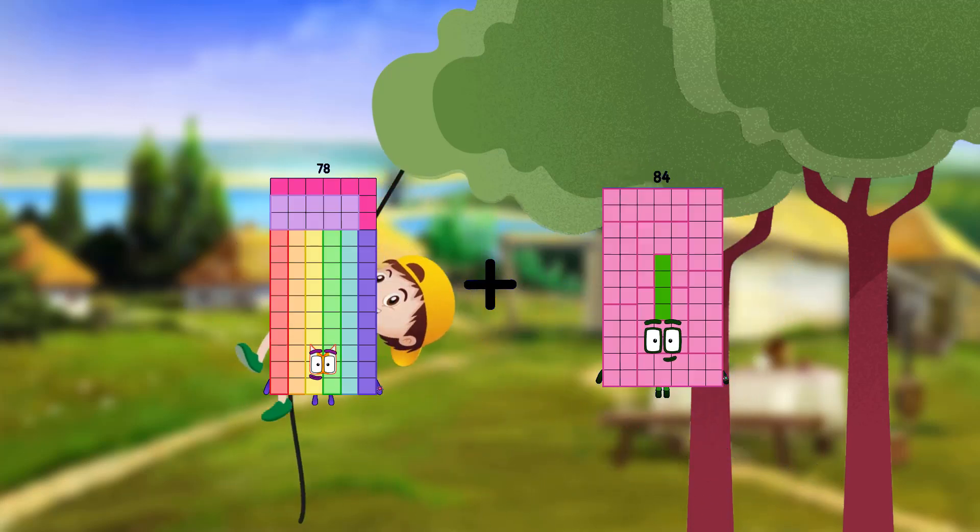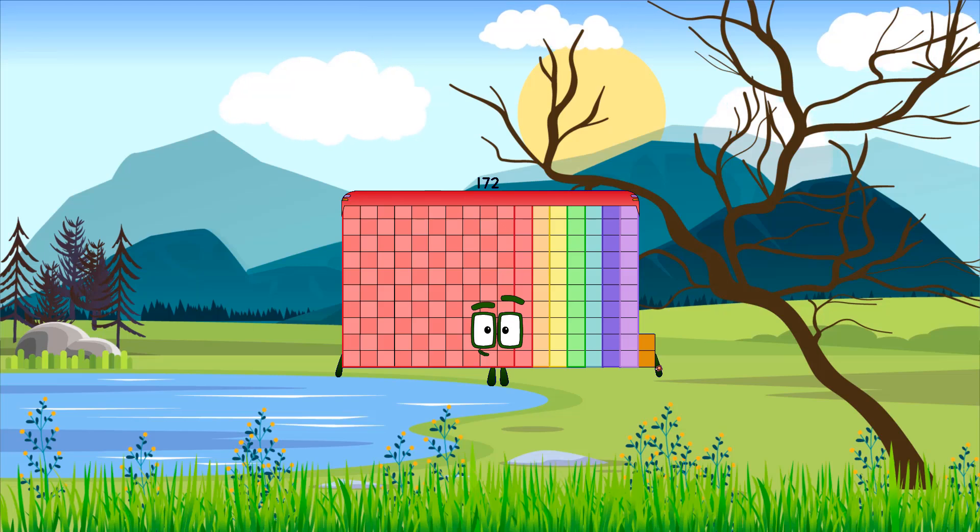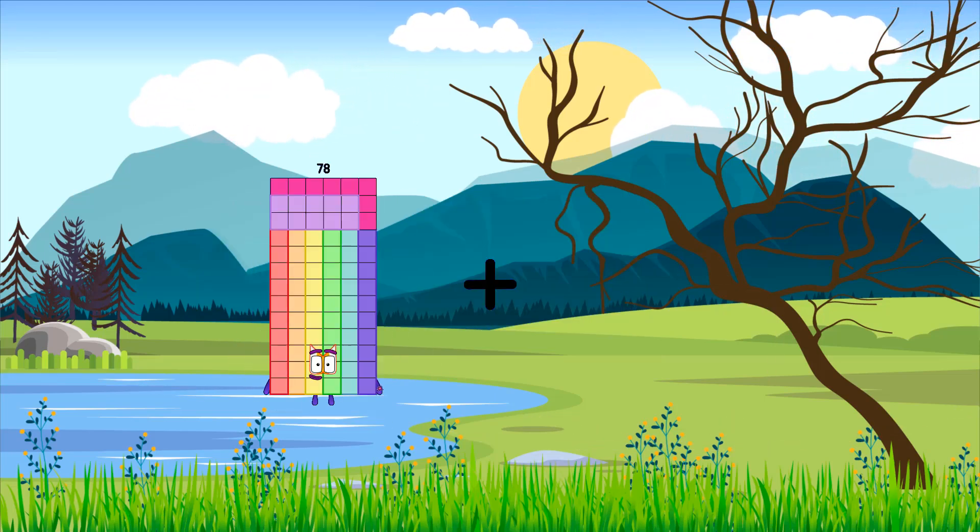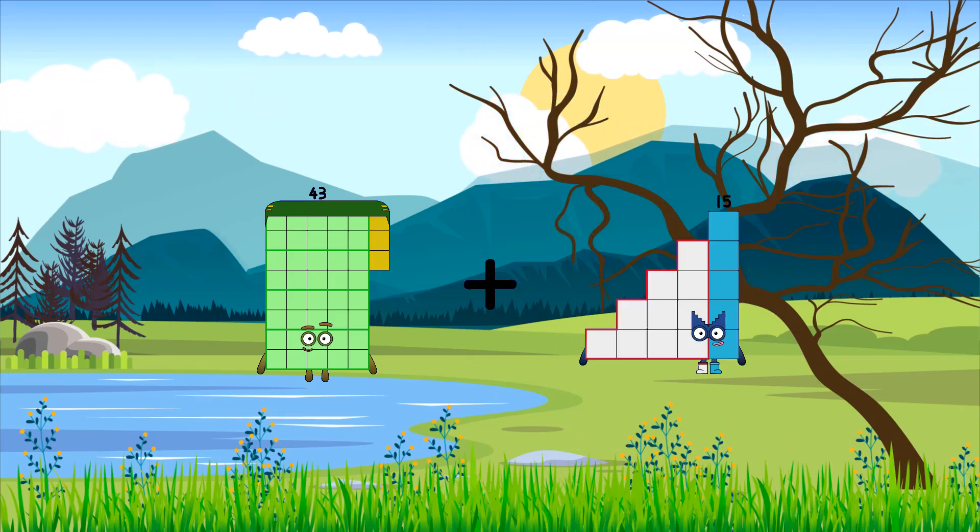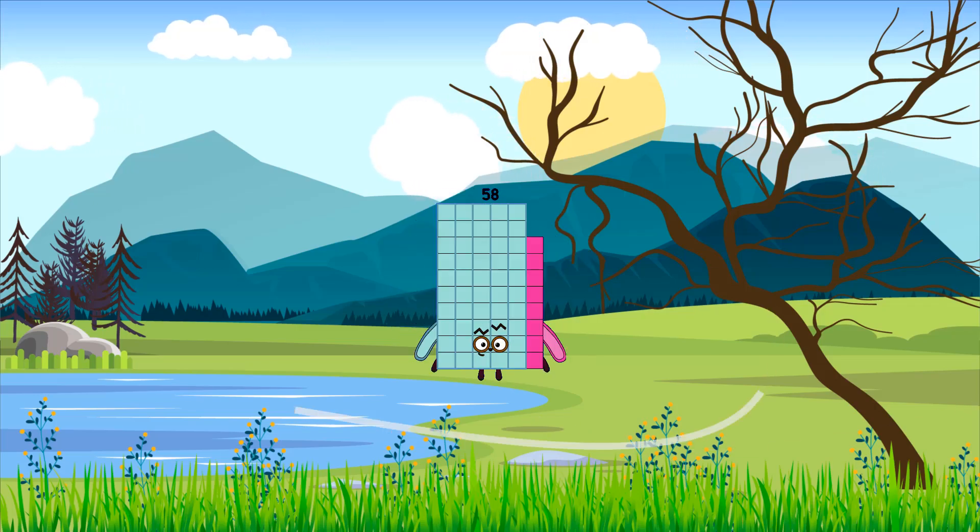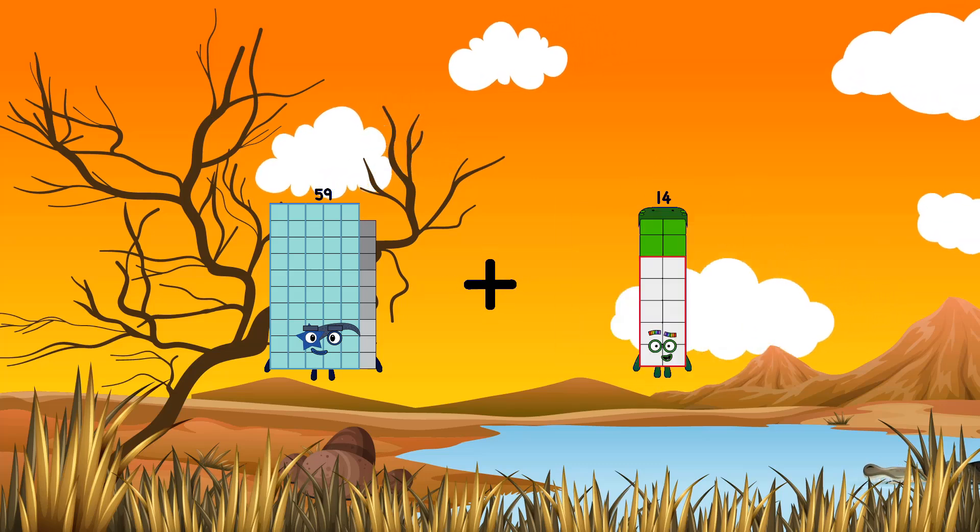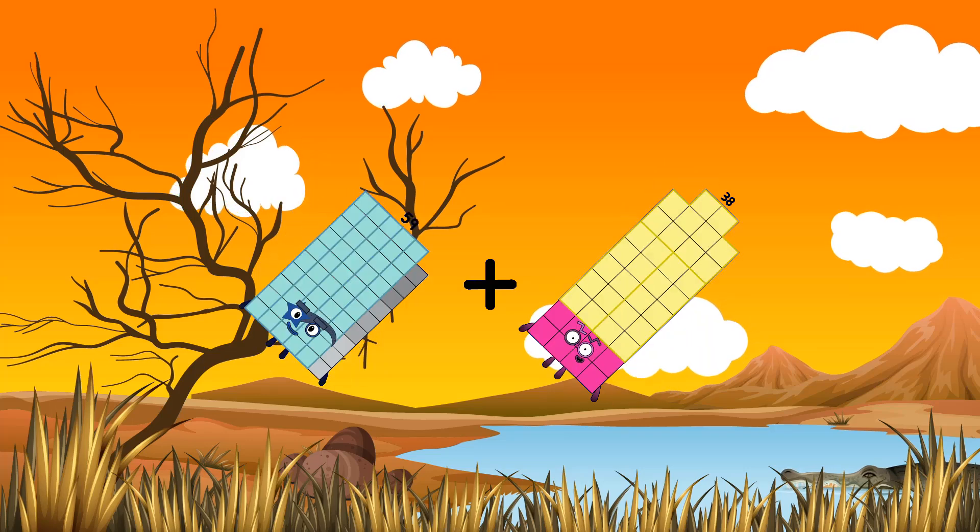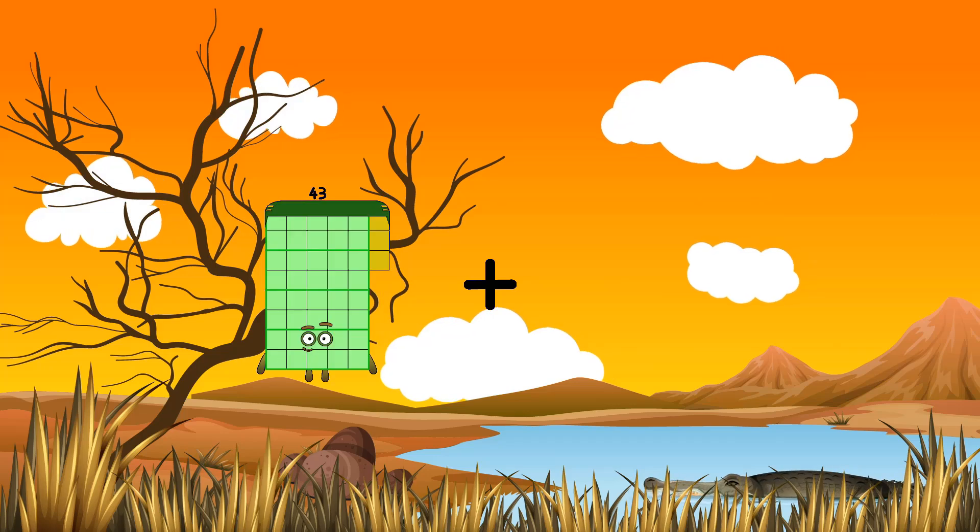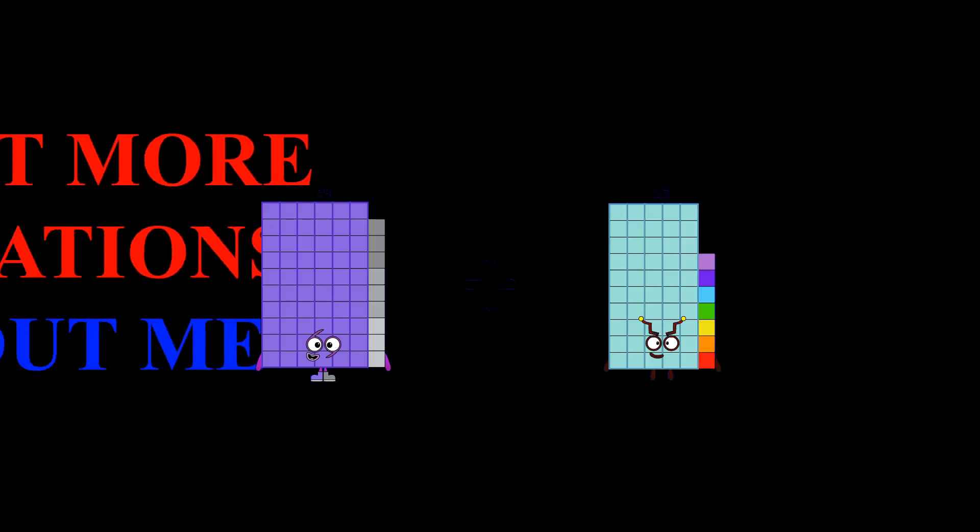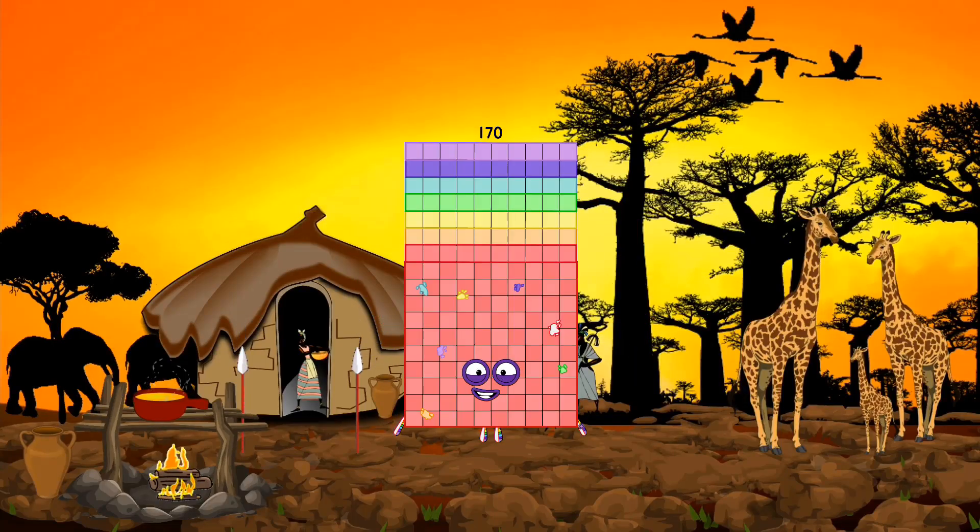78 plus 94 equals 172. 43 plus 15 equals 58. 88 equals 38. Equals 97. 69 plus 101 equals 170.